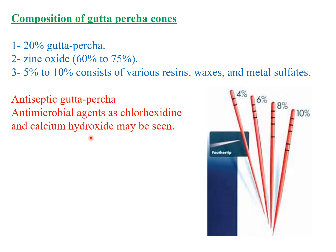Gutta-percha cones may be present in different tapers — they may be present in 2% taper, or maybe 4, 6, 8, and even 10. These are important because when we use rotary instrumentation we may use the specific taper of the gutta-percha cone that coincides with the rotary instrumentation system.